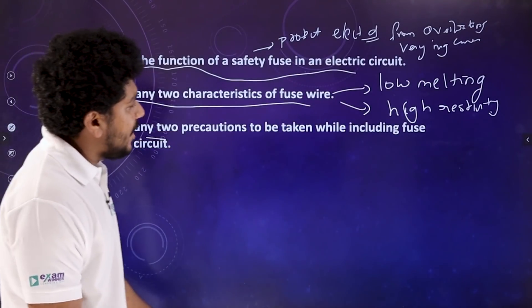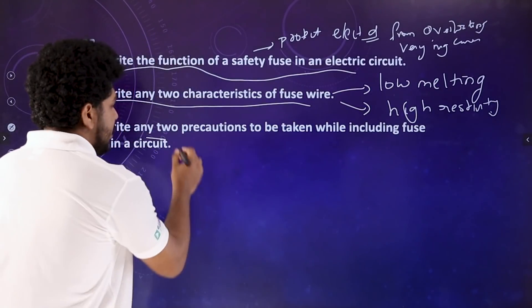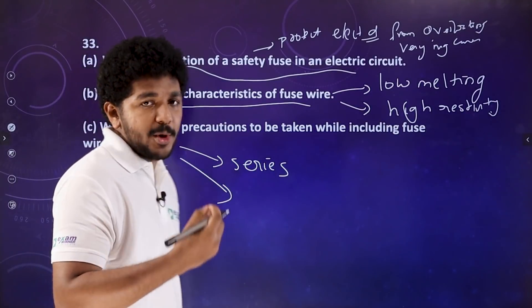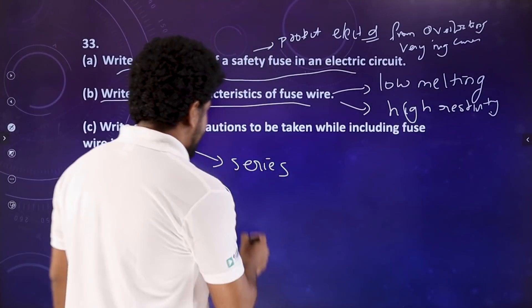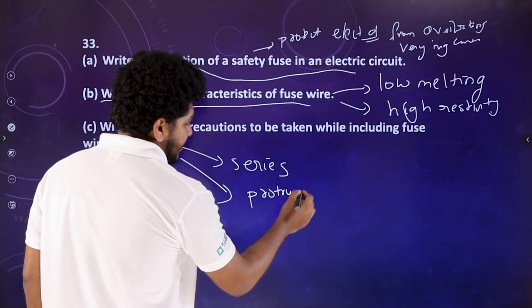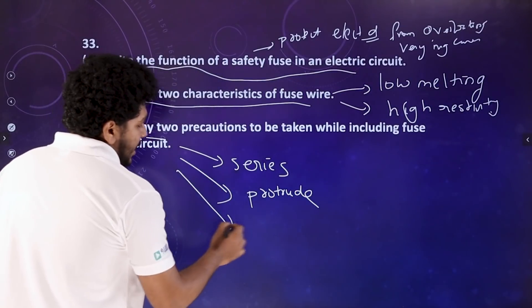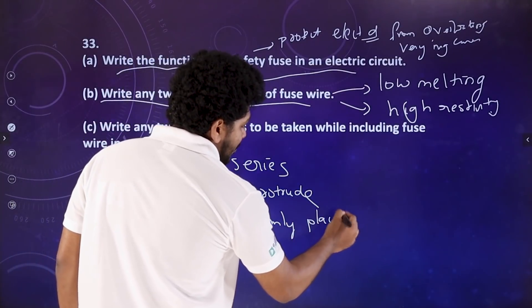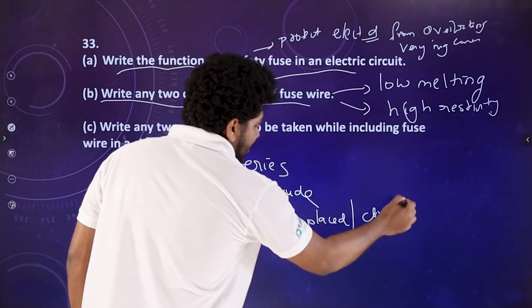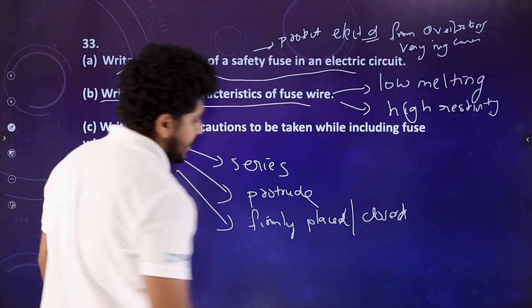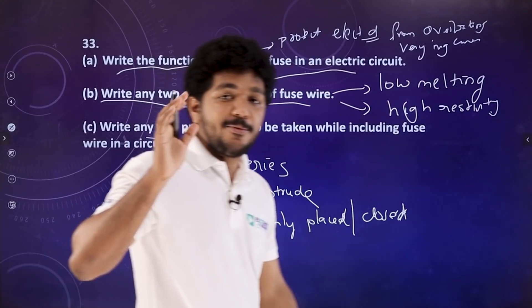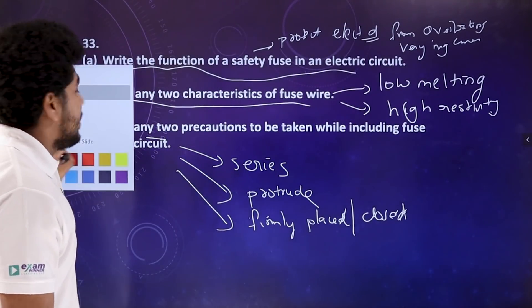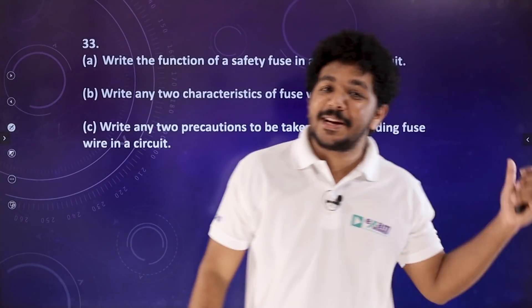Write any precautions to be taken while including fuse wire in the circuit. One: the fuse wire should be properly placed in the fuse holder. Two: it should be firmly and securely fixed — place it firmly and close it properly so it is safely connected.